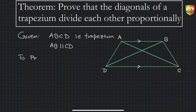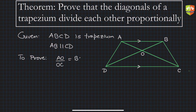Now, to prove: let's say O is the point of intersection of diagonals AC and BD. We have to prove that AO divided by OC is equal to BO divided by OD. This is what we need to prove.